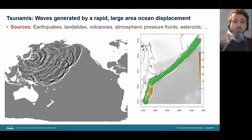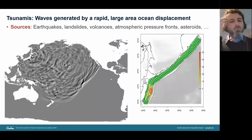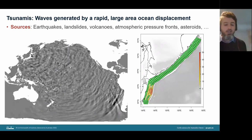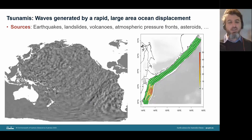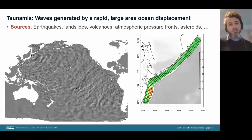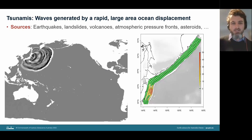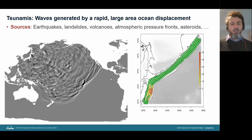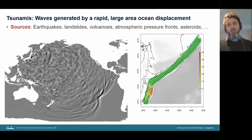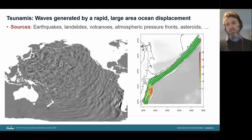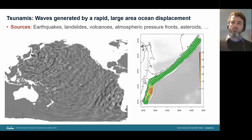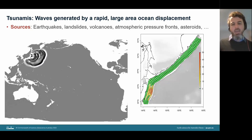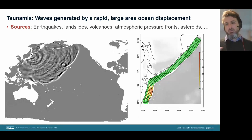Tsunami 101: tsunamis are waves generated by a rapid, large-area ocean displacement. Sources include earthquakes, landslides, volcanoes, or atmospheric pressure fronts. This animation depicts a tsunami very similar to the 2011 Japan tsunami, which was generated by an earthquake. Earthquakes generate tsunamis through slip on fault planes buried underneath the earth — here you see a representation of a massive fault on the subduction zone near Japan, with yellow and red colored areas representing the slip.